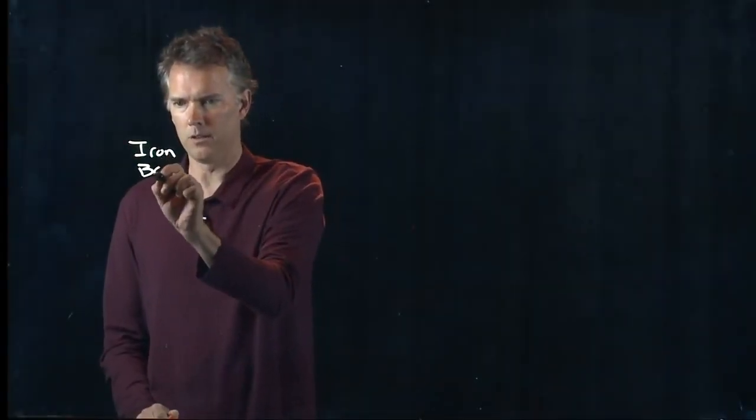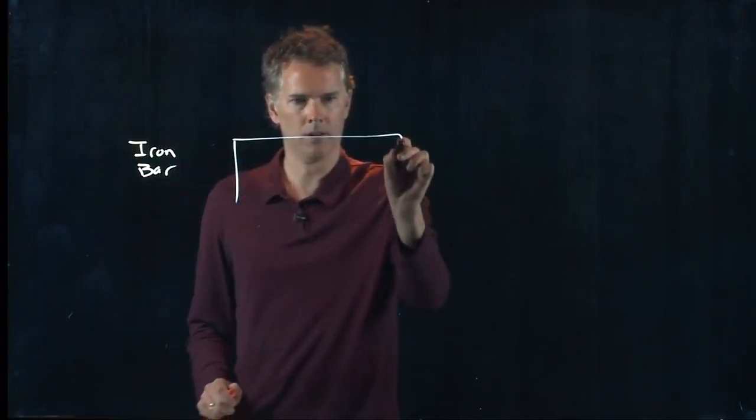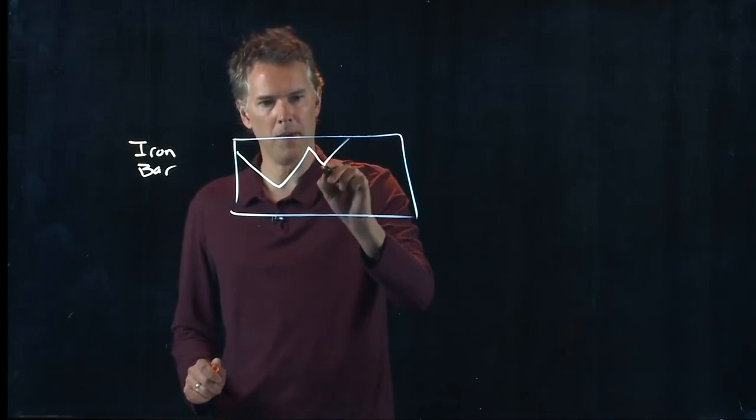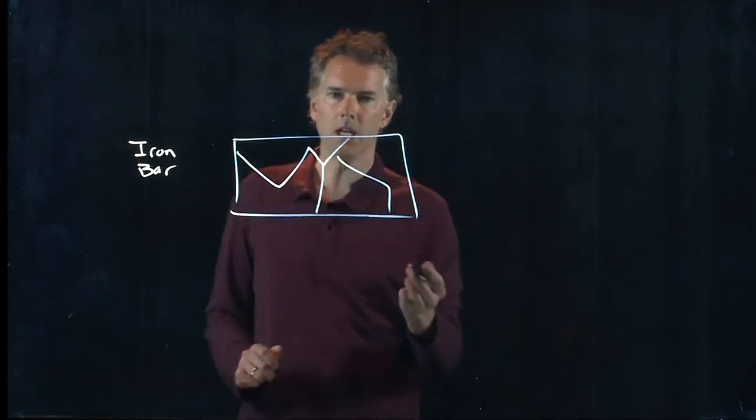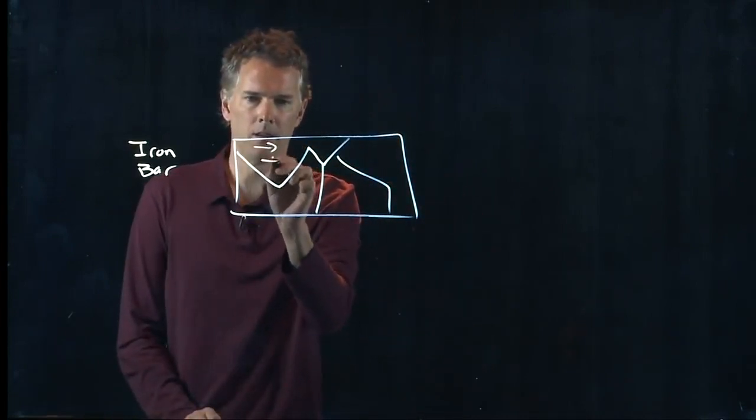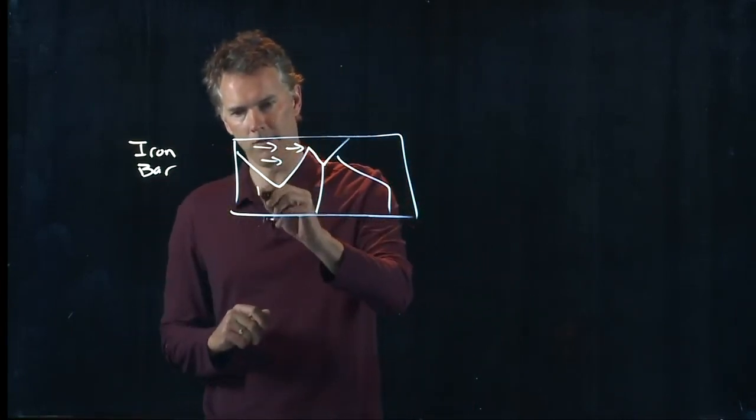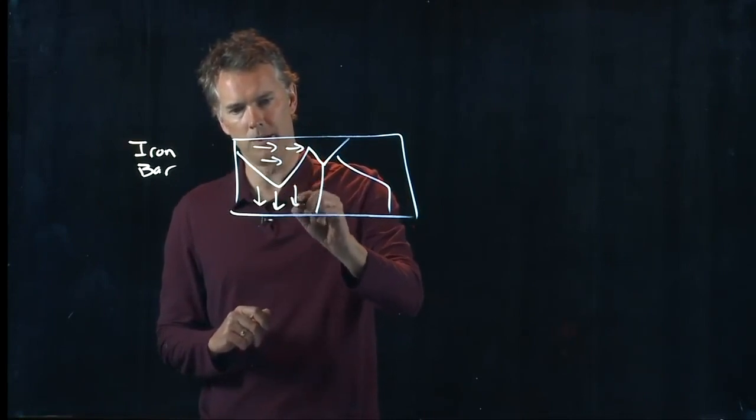Remember we drew a picture of an iron bar and it looked like the following. We have some set of domains, and in each domain the dipoles align in one direction, but from one domain to the next it's random orientation.